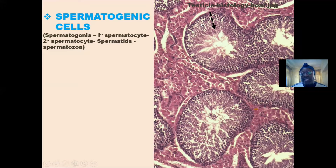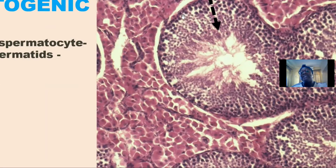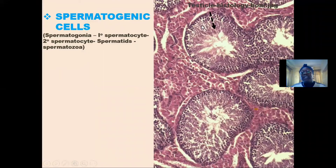At this end, if we zoom in into this image, we will see that at this region we have dark pigmented cells, which are called the spermatogonia. These are the spermatogonia cells. They are seen at the margin of the seminiferous tubules.